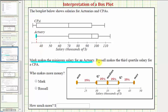Russell makes the third quartile salary for a CPA. Here's the box plot for a CPA. Here's the third quartile. Therefore, Russell makes ninety-five thousand dollars per year.